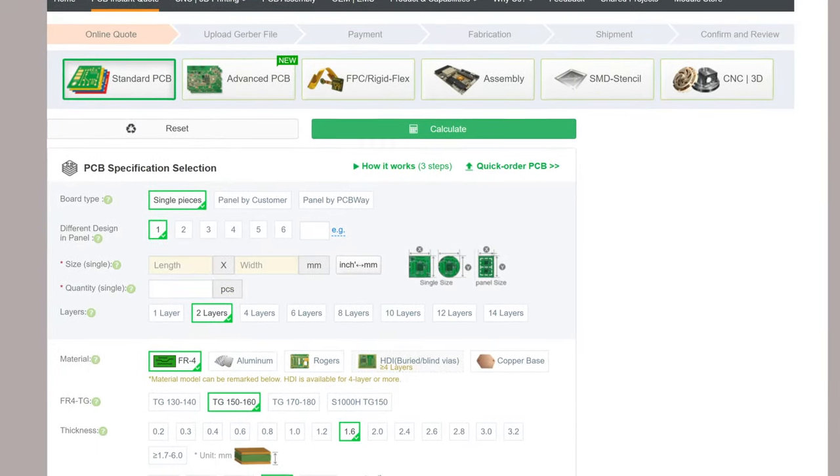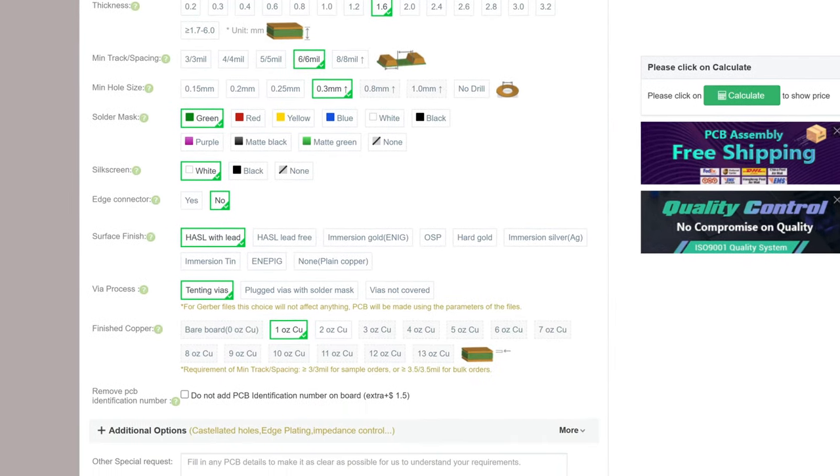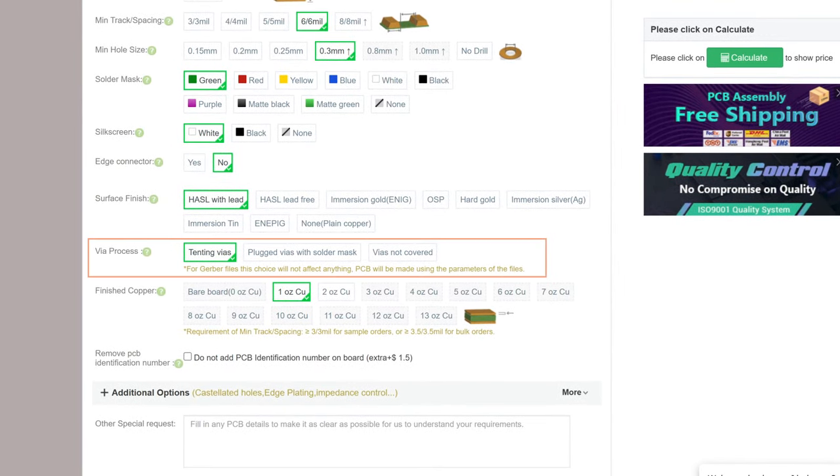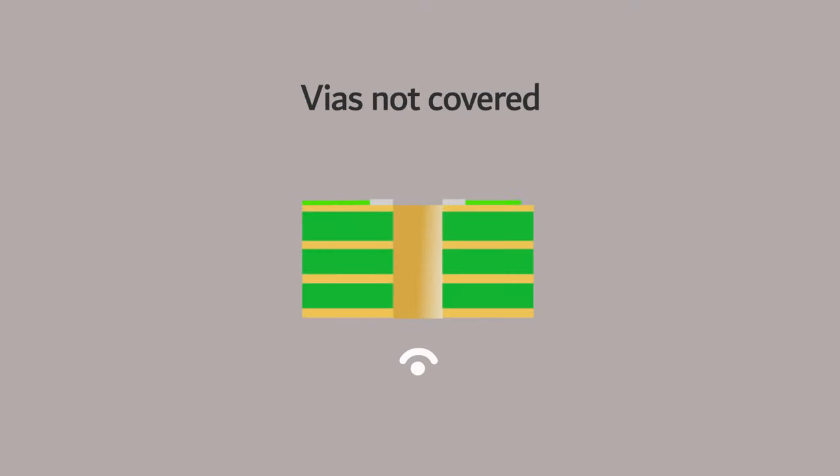When you choose the vias not covered for a PCB design, it means both the via hole and the annular ring will not be covered with solder mask. These uncovered vias are usually used to debug measurement signals. Also, leaving vias uncovered has other advantages. For example, it can increase the heat dissipation area, which is conducive to heat dissipation.